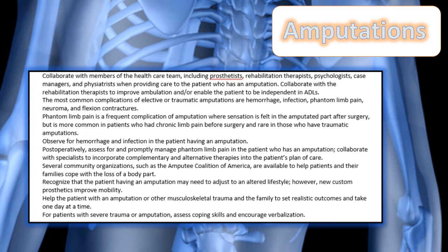Acutely, you're going to manage the risk for hemorrhage and the risk for infection after an amputation. Postoperatively, you're also going to manage phantom limb pain, which you will have to treat — this is also covered in your notes. Remember that patients who have experienced severe trauma or amputation are going to need coping skills and coping strategies to help them manage their amputation.